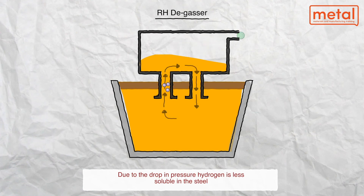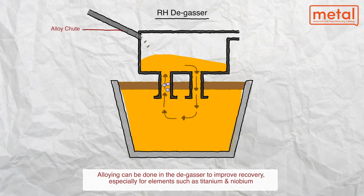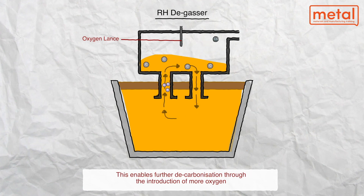A further benefit of vacuum degassing is alloy control. Special properties can be obtained by micro-alloying with very small but precise quantities of trace elements such as boron, titanium, niobium, vanadium, and even rare earth metals. These metals must be present in solution, but they have a high affinity for oxygen. By adopting vacuum treatments, control of these tiny additions can be made effectively.